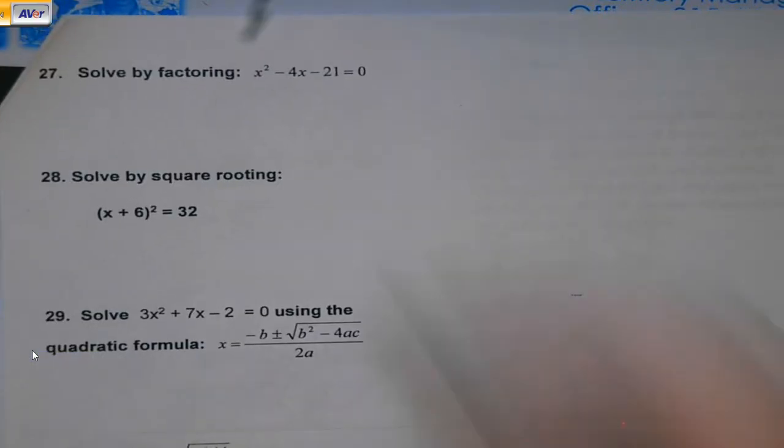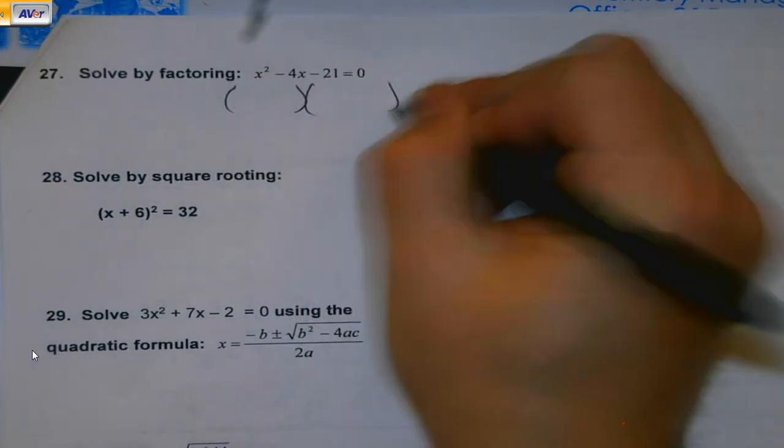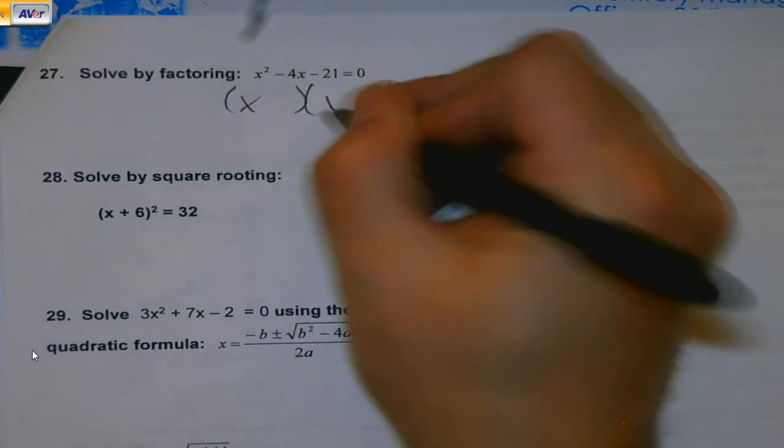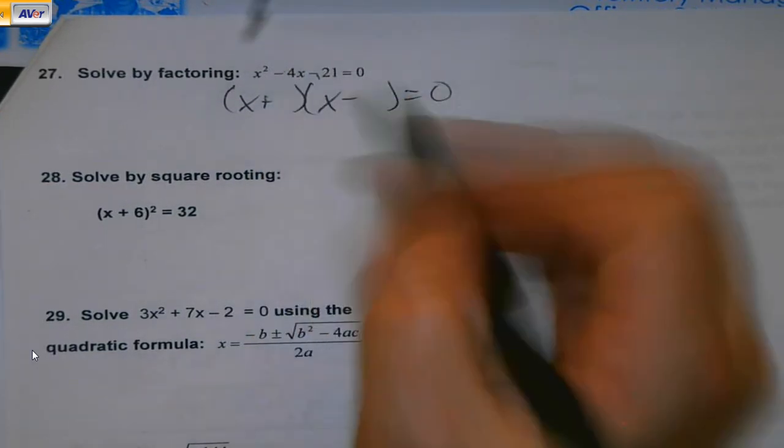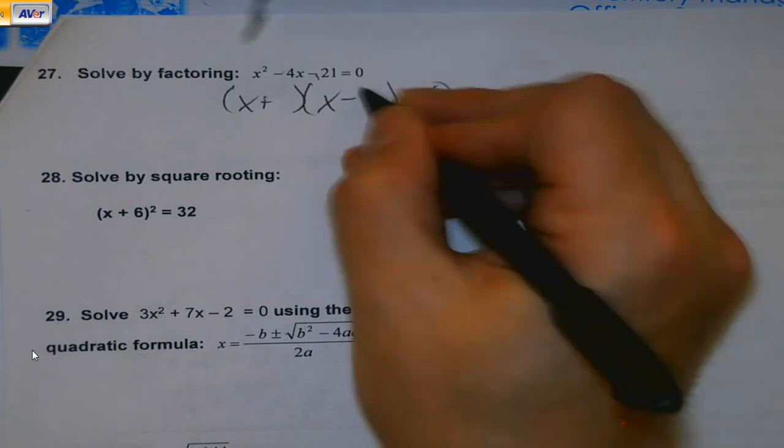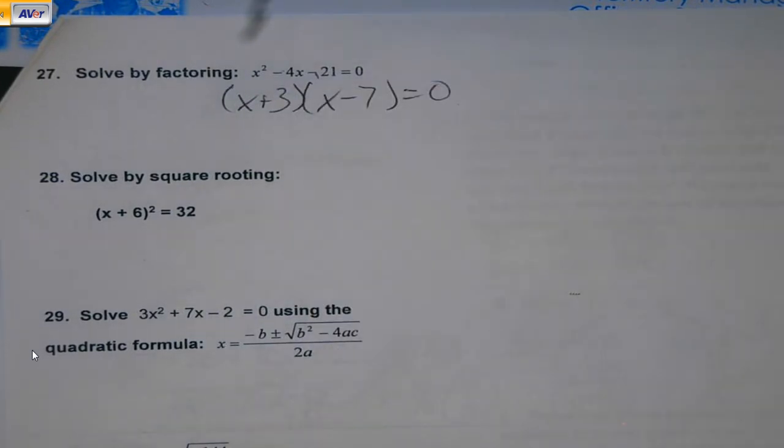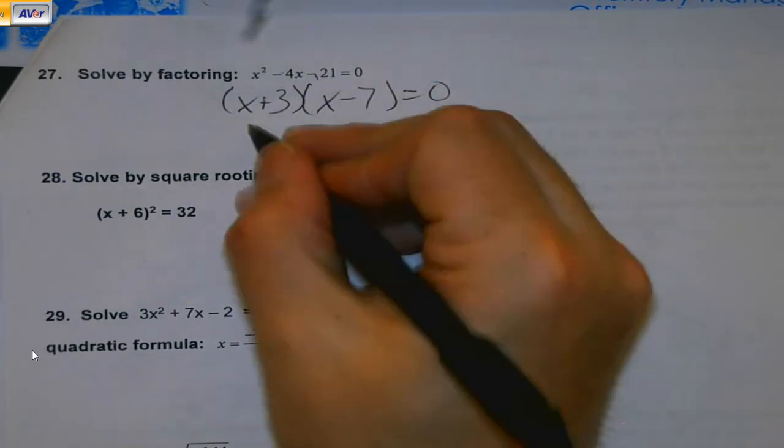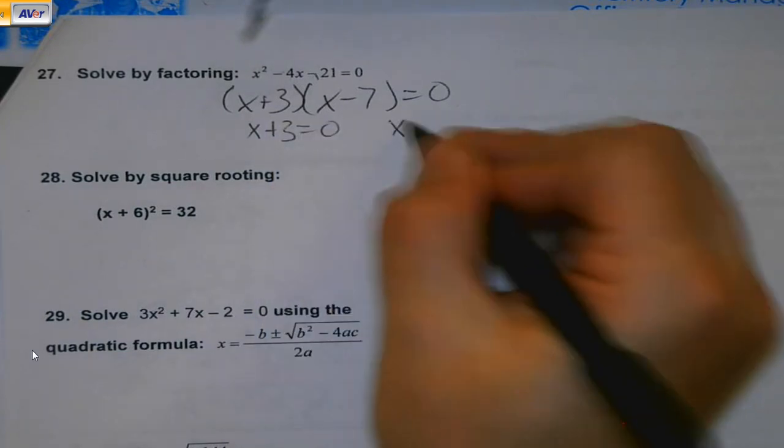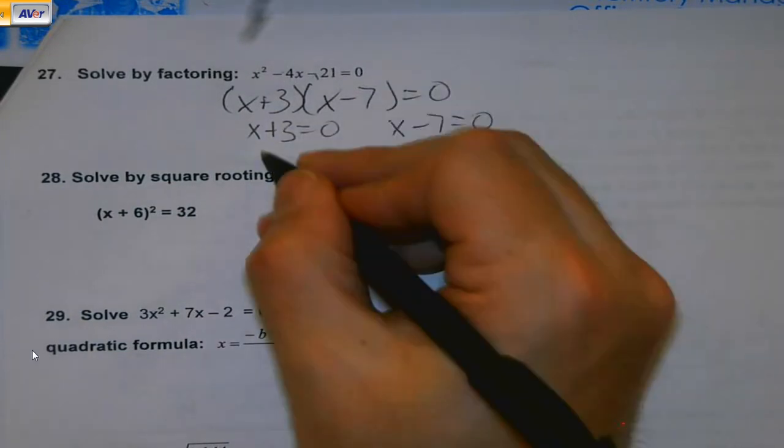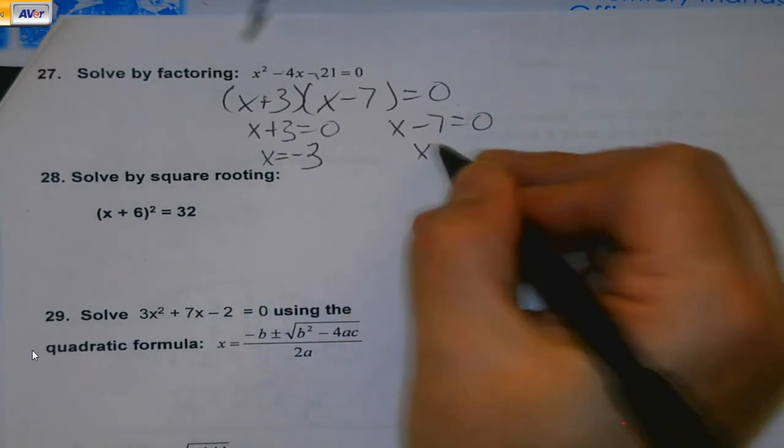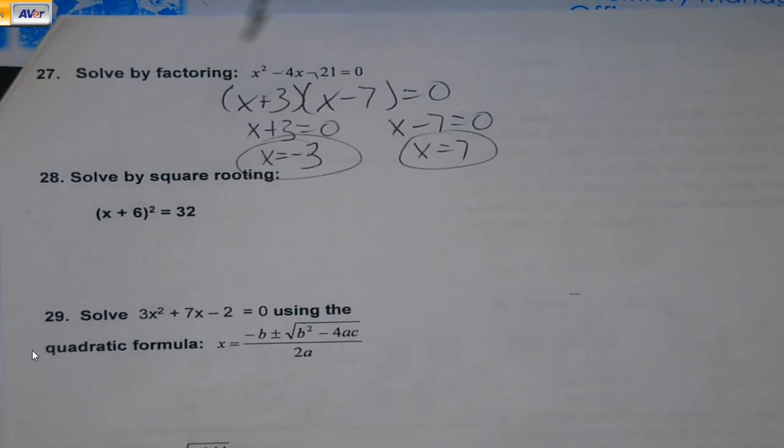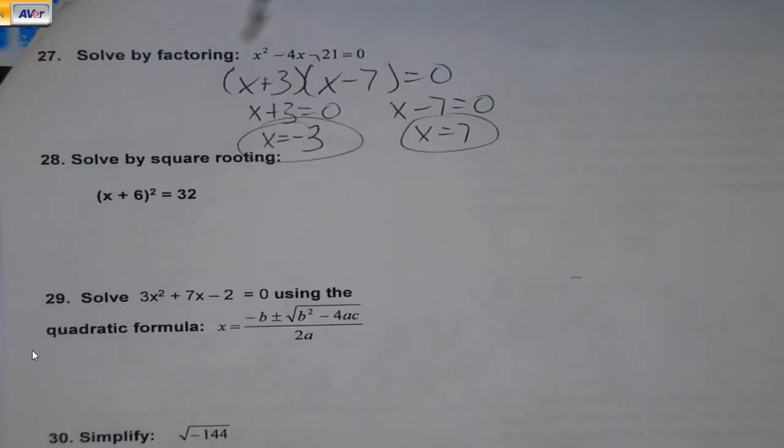Solve by factoring. Biggest thing here is to remember the solve part. Multiplies to a negative. Adds to a negative means the negative is going to be bigger. They're four apart. Seven and three. Don't stop. And luckily with multiple choice, you're not going to have a choice. But do remember that you're setting them equal to zero and you have to do opposites. Don't choose negative seven and three. That would be sad.